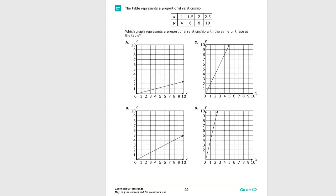The table represents a proportional relationship. Which graph represents a proportional relationship with the same unit rate as the table? Now they've given us some information here. They've said that the table has a unit rate, which is to say that the change is constant, which is linear.